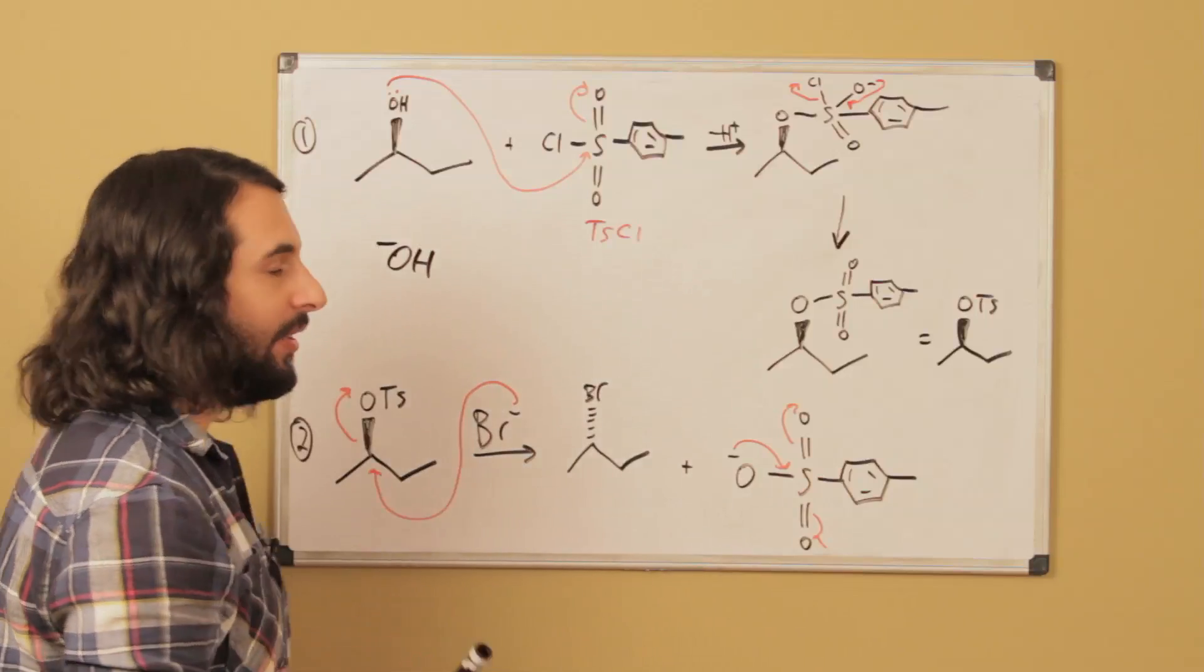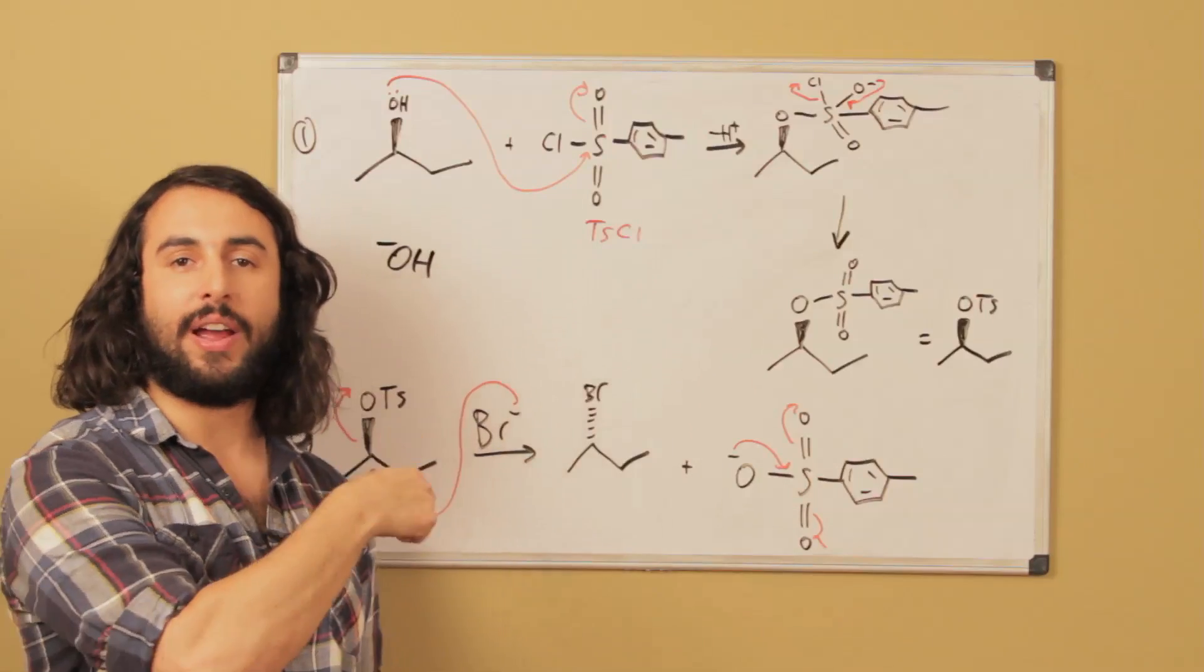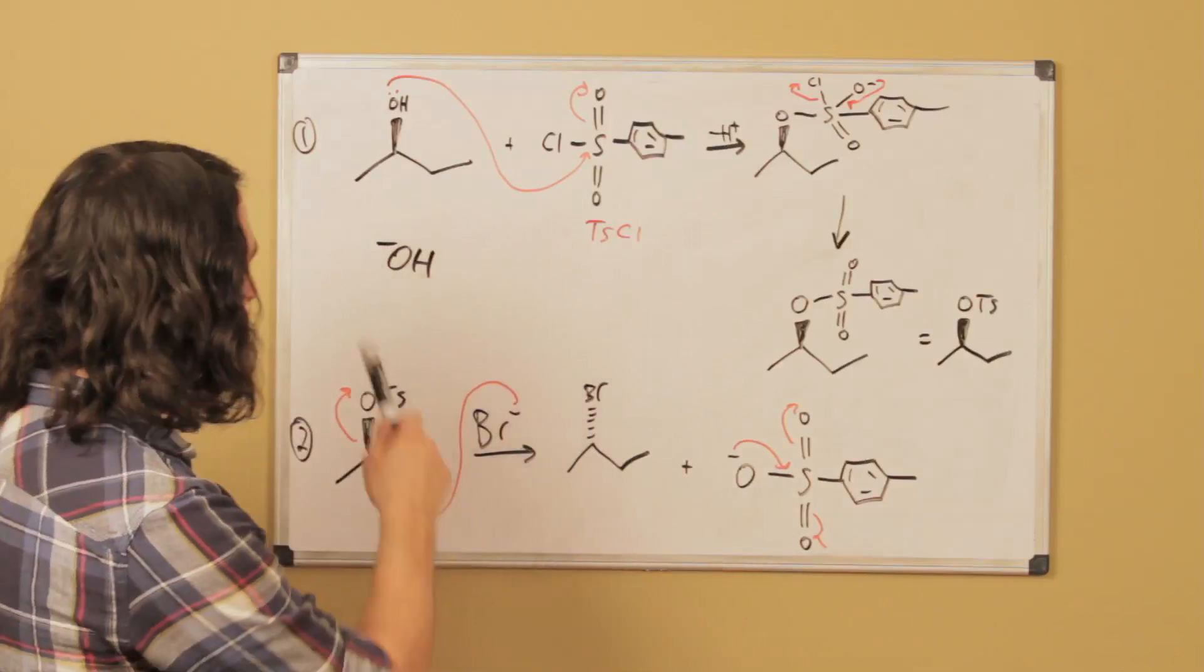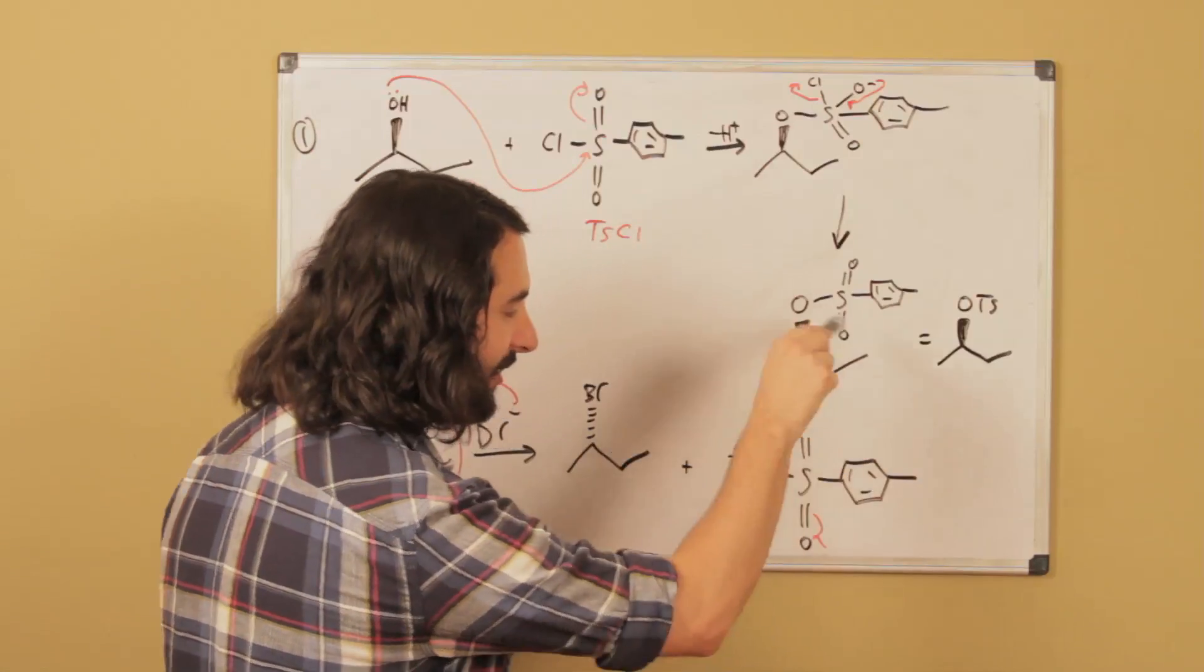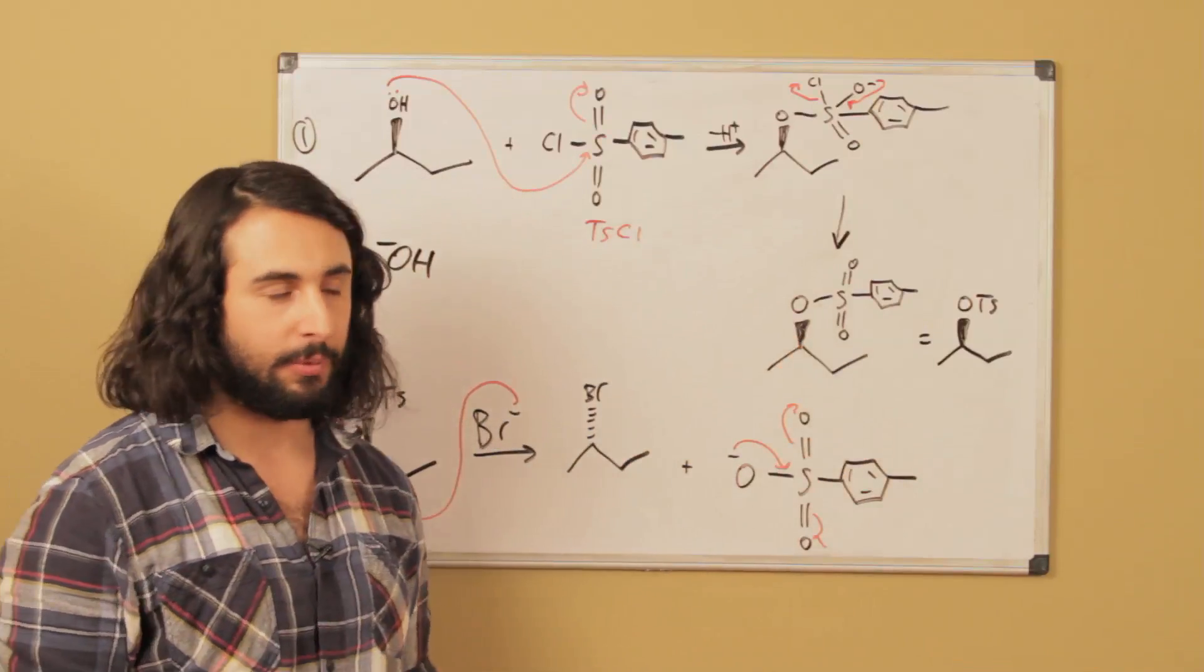And so if that tried to leave and we had OH-, now that's not very stable. That's a strong base. That's why OH is such a terrible leaving group. But O-tosyl is a great leaving group because it's got resonance for days all over the tosyl group.